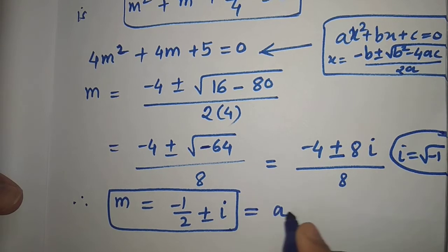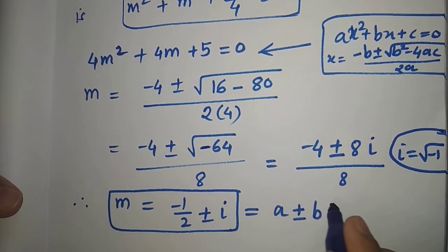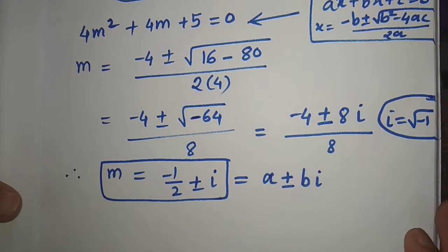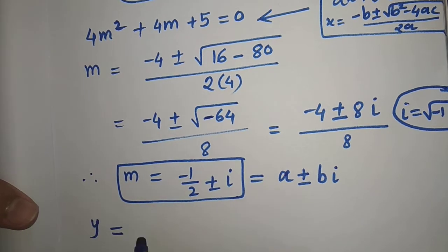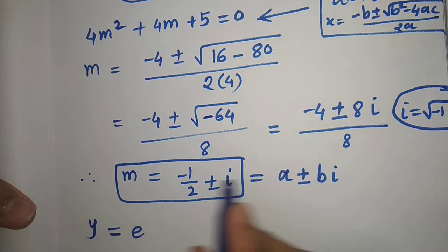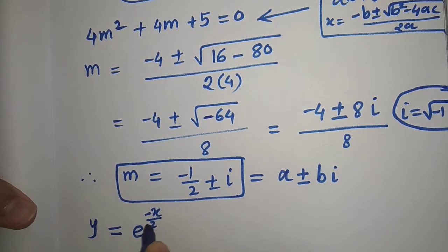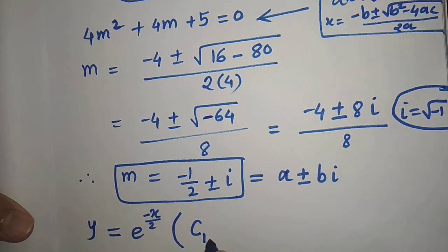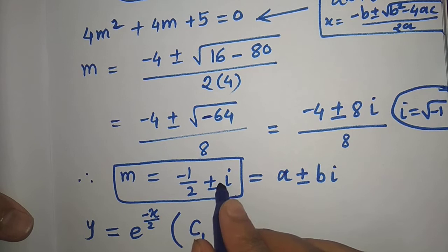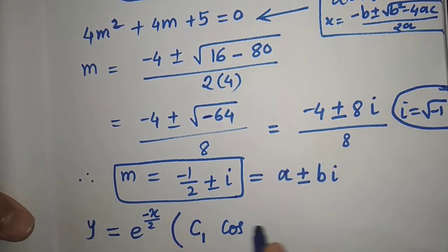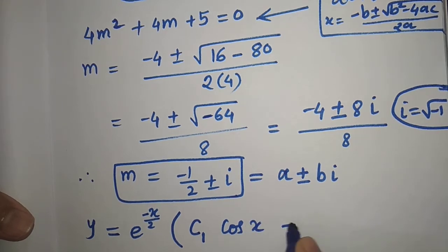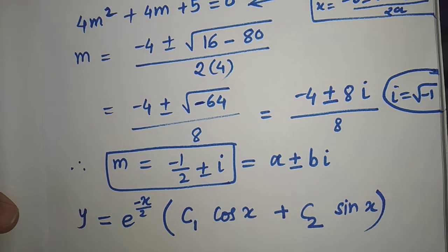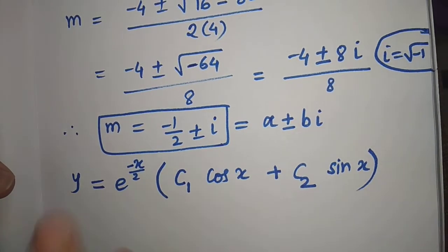These are complex roots. Denoting them as a plus or minus b times i, where a equals minus one-half and b equals 1: when the roots of the auxiliary equation are complex numbers, the general solution is y equal to e raised to ax into bracket c1 cos(bx) plus c2 sin(bx). So here y equal to e raised to minus x/2 into bracket c1 cos x plus c2 sin x, and this is our general solution.